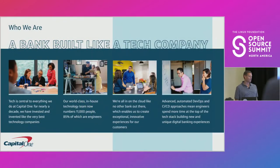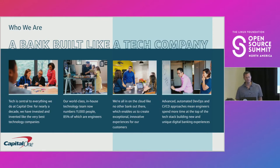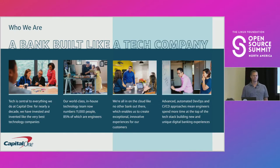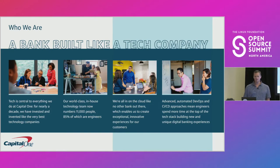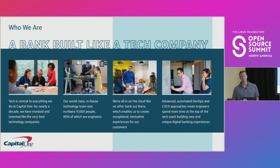A little bit about Capital One. We are a bank that's built like a tech company. For about a decade we've been investing in becoming a tech company, bringing our engineering talent in-house and building our own software solutions. Our tech team is about 11,000 people and we're all in on the cloud. All of our capabilities are built on AWS. We also have a pretty advanced DevOps pipeline that automates a lot of the manual tasks that developers typically have to do, and allows us to use a microservices architecture and allows our engineers to really focus on innovating and building new capabilities at the top of the tech stack.